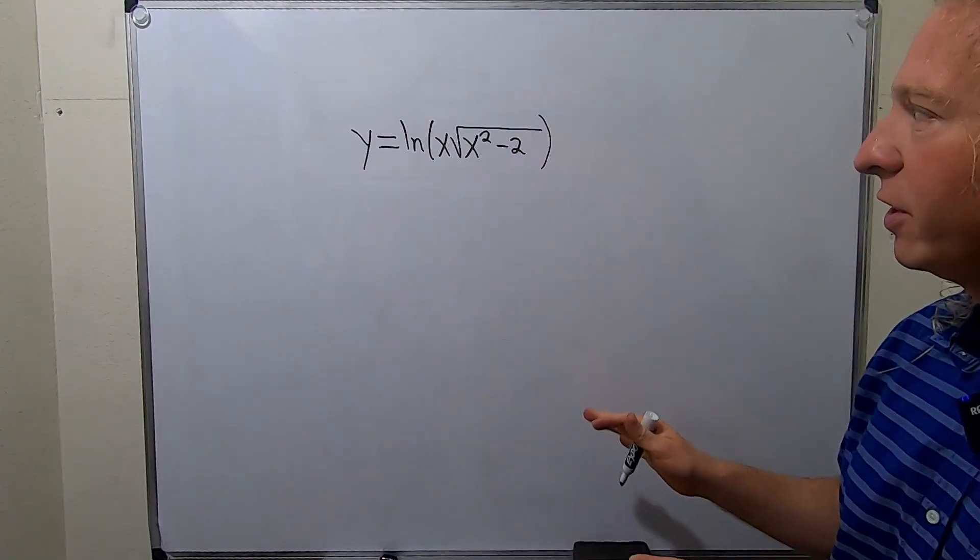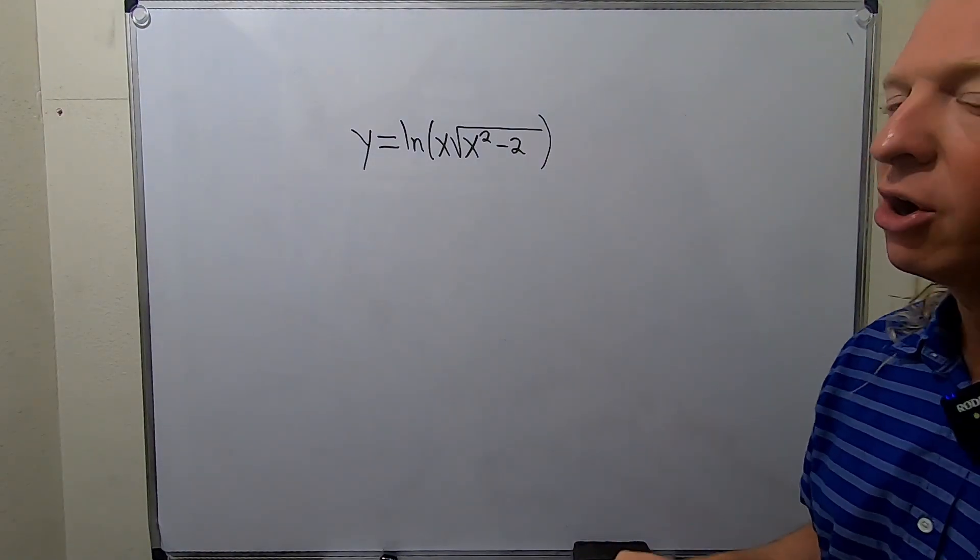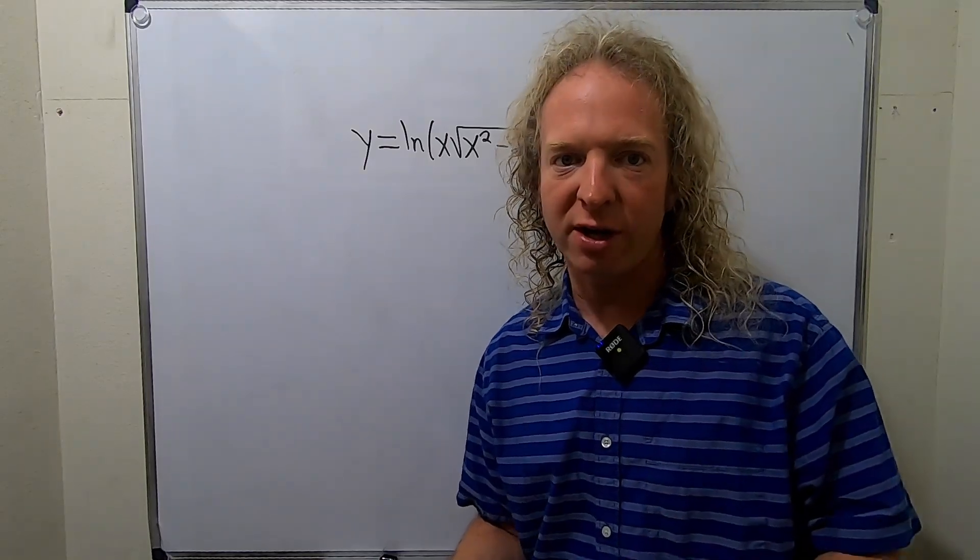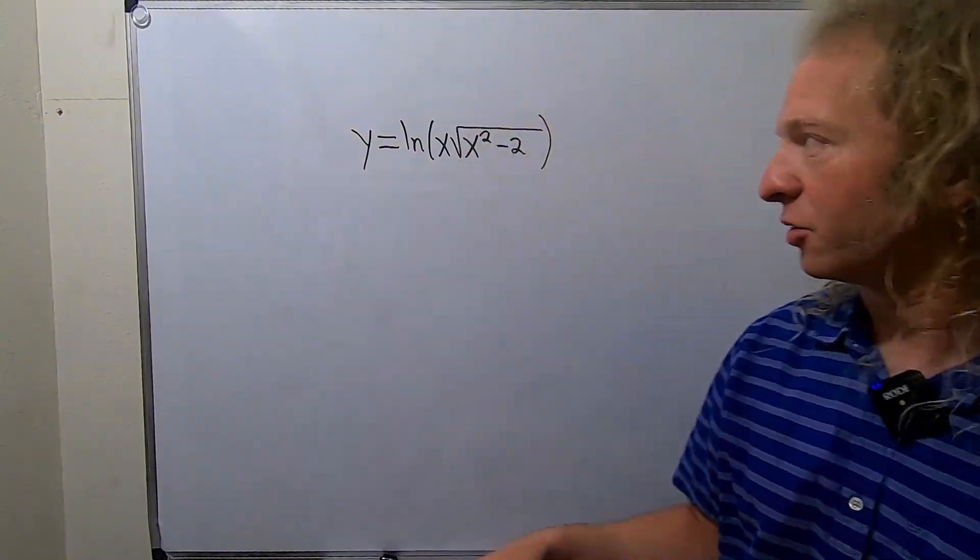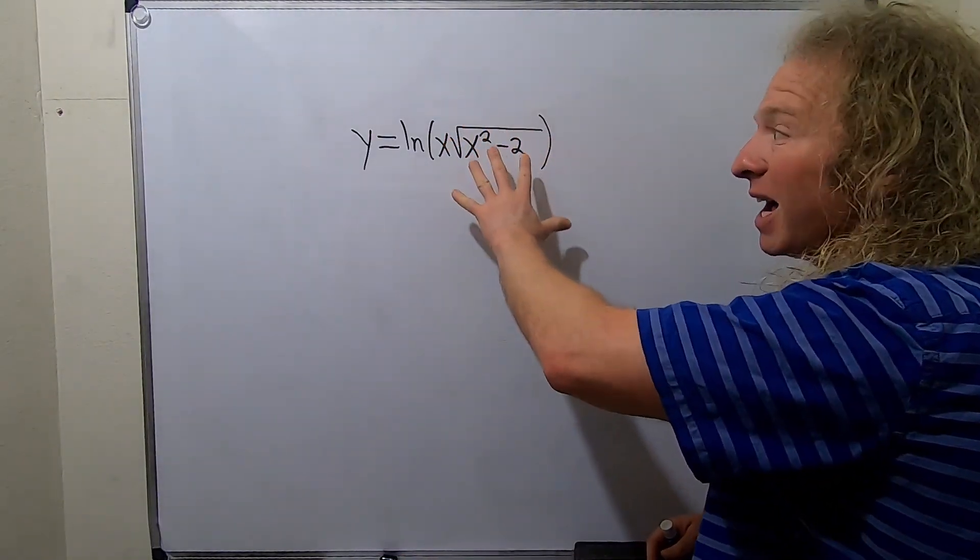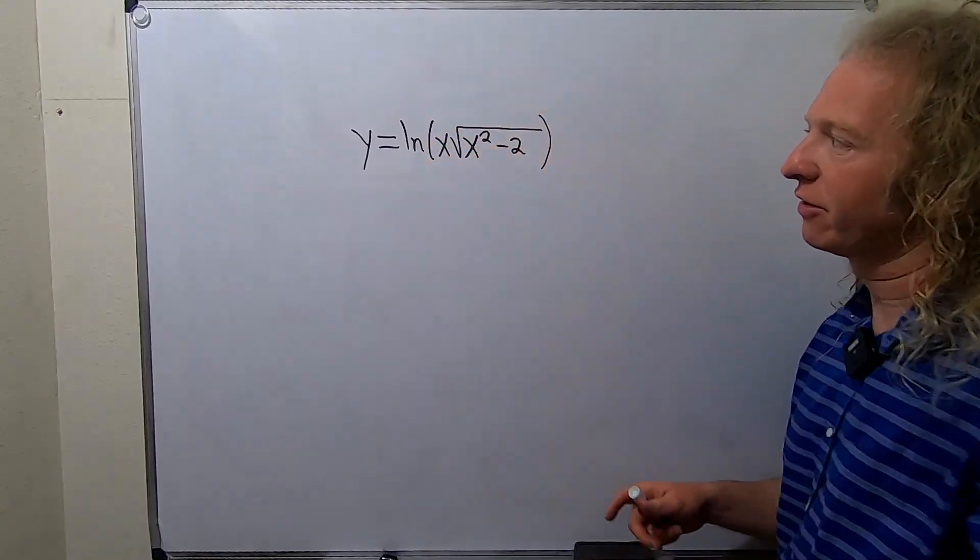In this video, we're going to find the derivative of this function. We know that the derivative of the natural log of x is just 1 over x. So here would be 1 over this stuff times the derivative of all of this stuff.